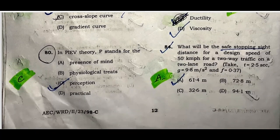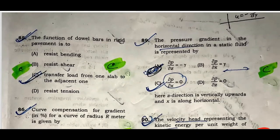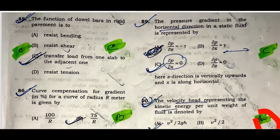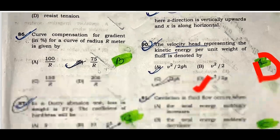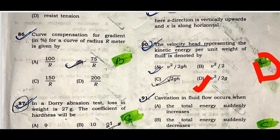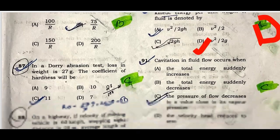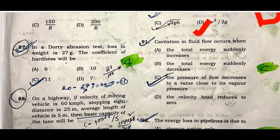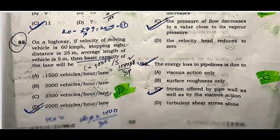Question eighty-three: The test carried out to know the resistance of flow of a given bituminous material is the viscosity test. Option D is correct. Question eighty-four: The safest stopping sight distance is 61.4 meters. Question eighty-five: The function of dowel bars is to transfer load from one slab to an adjacent one. Curve compensation is given by 75 divided by R (in percentage). In a Deval abrasion test, loss of weight is 27 kg; the coefficient of hardness is 11.